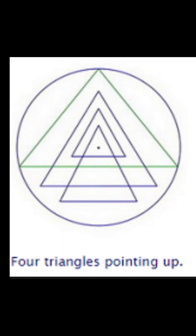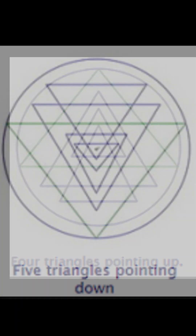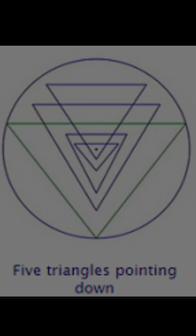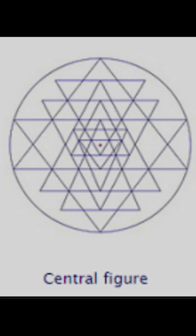There are nine triangles interlaced to form 43 smaller triangles in a web symbolic of the entire cosmos or womb — symbolic of creation.